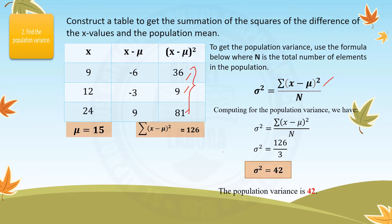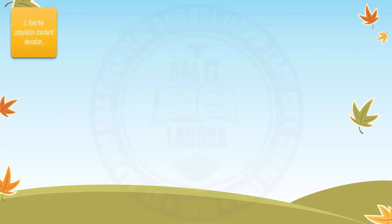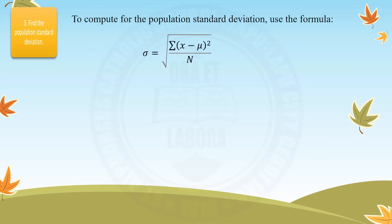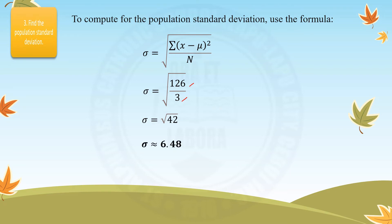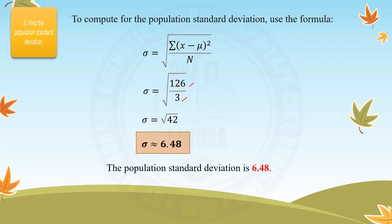Therefore, the population variance is 42. For step 3 — finding the population standard deviation — we substitute the summation value of 126 into the formula and divide by 3, giving us the square root of 42. The square root of 42 is approximately 6.48. Therefore, the population standard deviation is 6.48.